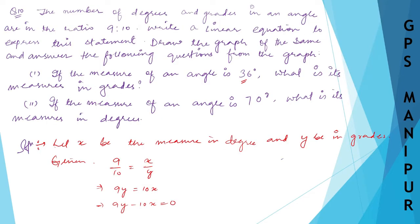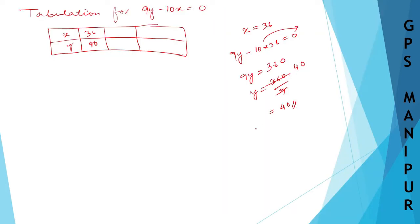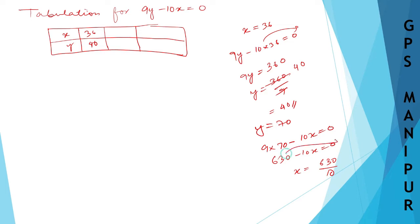Next, if the measure is 70 grades, then y = 70. Substituting: 9 × 70 minus 10x = 0, so 630 = 10x, therefore x = 63. So when y = 70, x = 63.